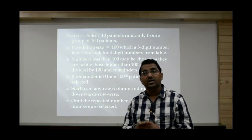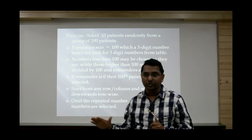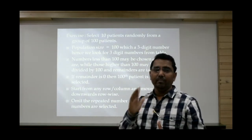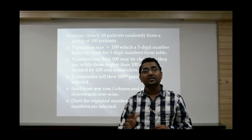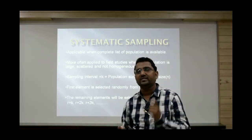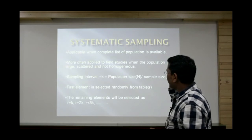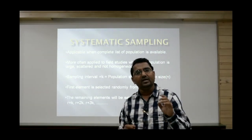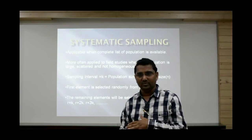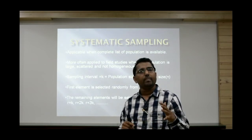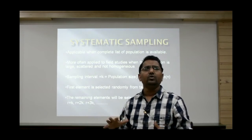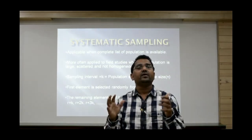Simple random sampling is easy to conduct, but it has limitations — it is useful only when populations are small and homogeneous. In real life, populations are big and heterogeneous. For such populations, we use the next technique called systematic sampling, which is the most popular technique.